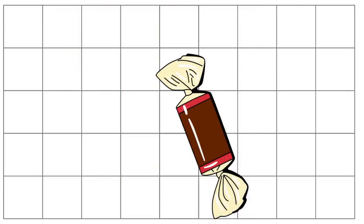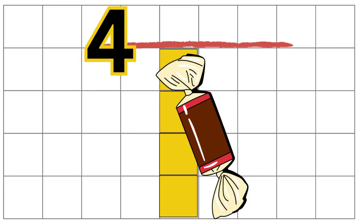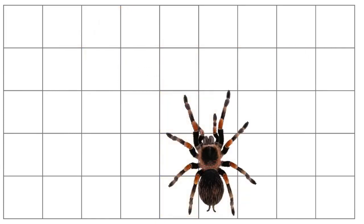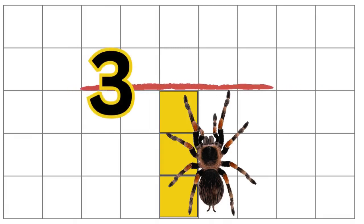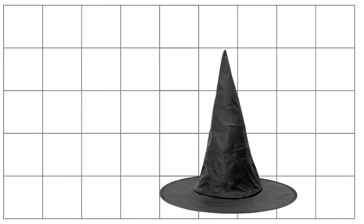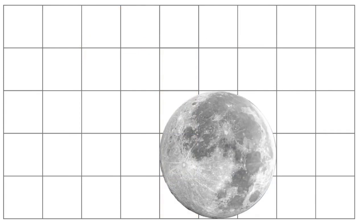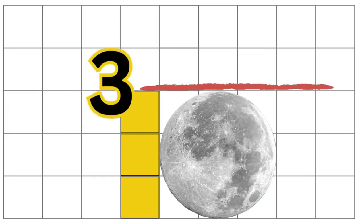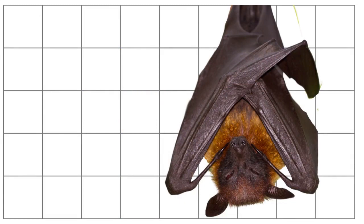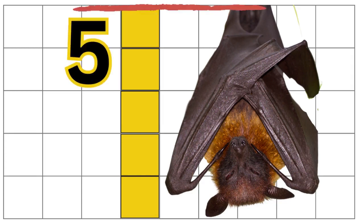Measure the candy. 1, 2, 3, 4. This candy is about 4 units. How big is the spider? 1, 2, 3. Now count to measure the hat. 1, 2, 3, 4. The hat's measurement is 4 units. How big is this moon? 1, 2, 3. Count the squares to measure the bat. 1, 2, 3, 4, 5. 5 units tall.